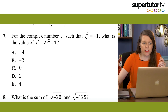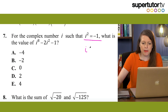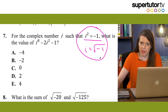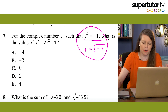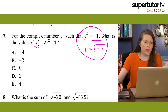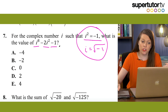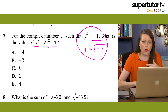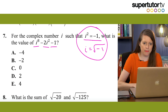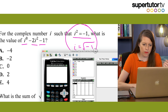One kind of problem you can do on the calculator is taking i to a power. We have for the complex number i such that i² equals negative one — sometimes you'll see i equals the square root of negative one. Either way, it's the same thing; that's just the definition of i, our imaginary number. For example: what is the value of i⁸ minus 2i² minus 1? My shortcut hack is to pull up the TI-84 simulator.